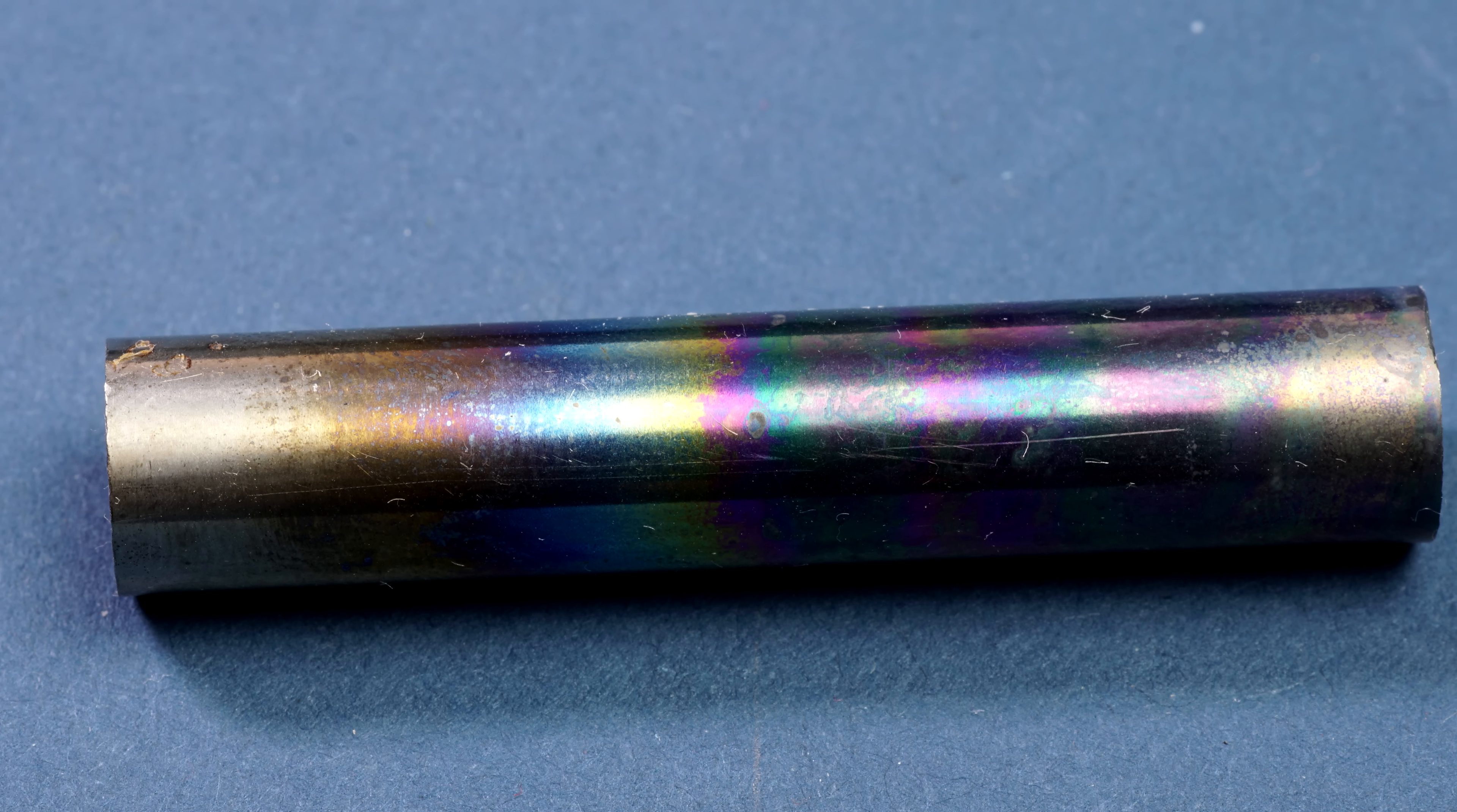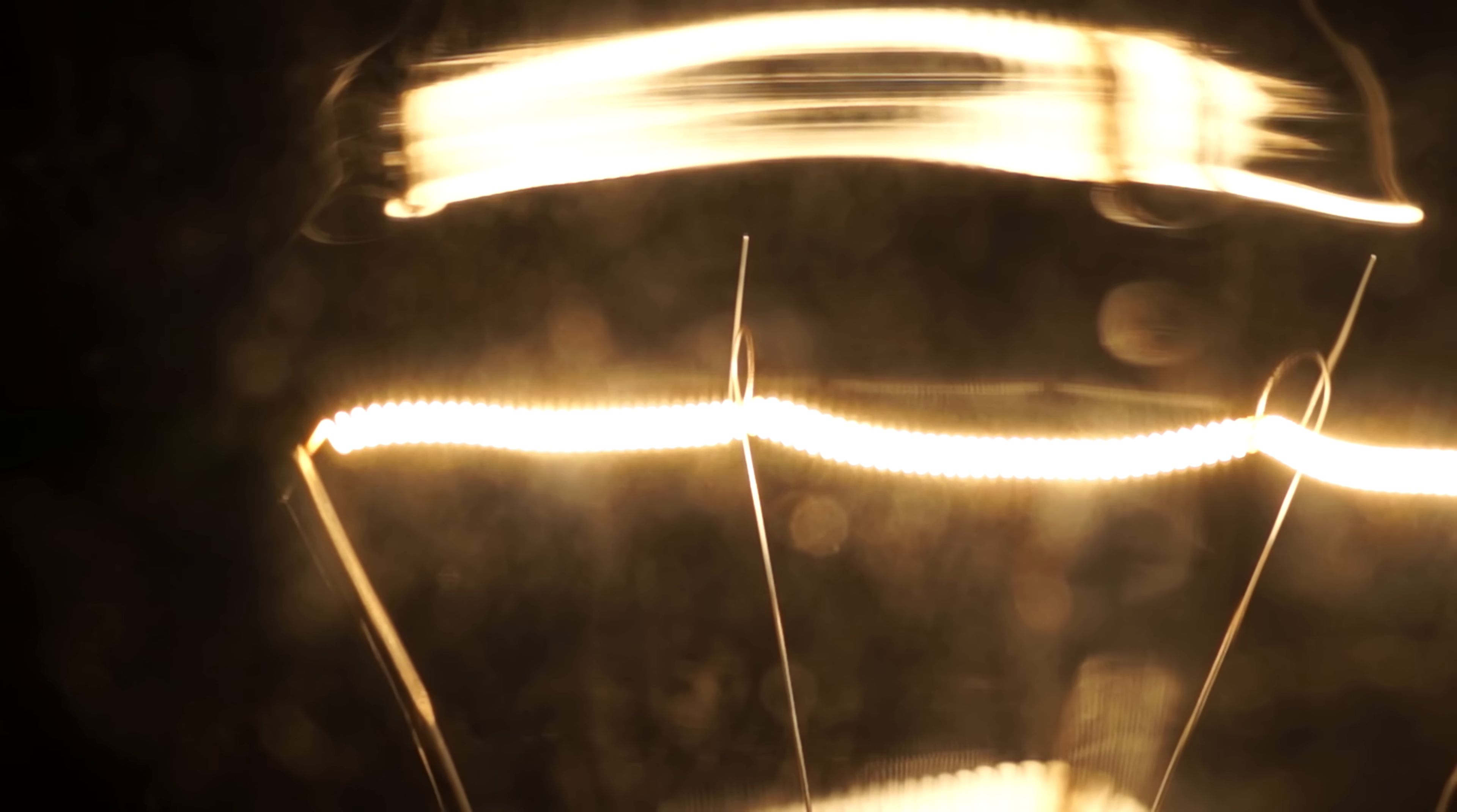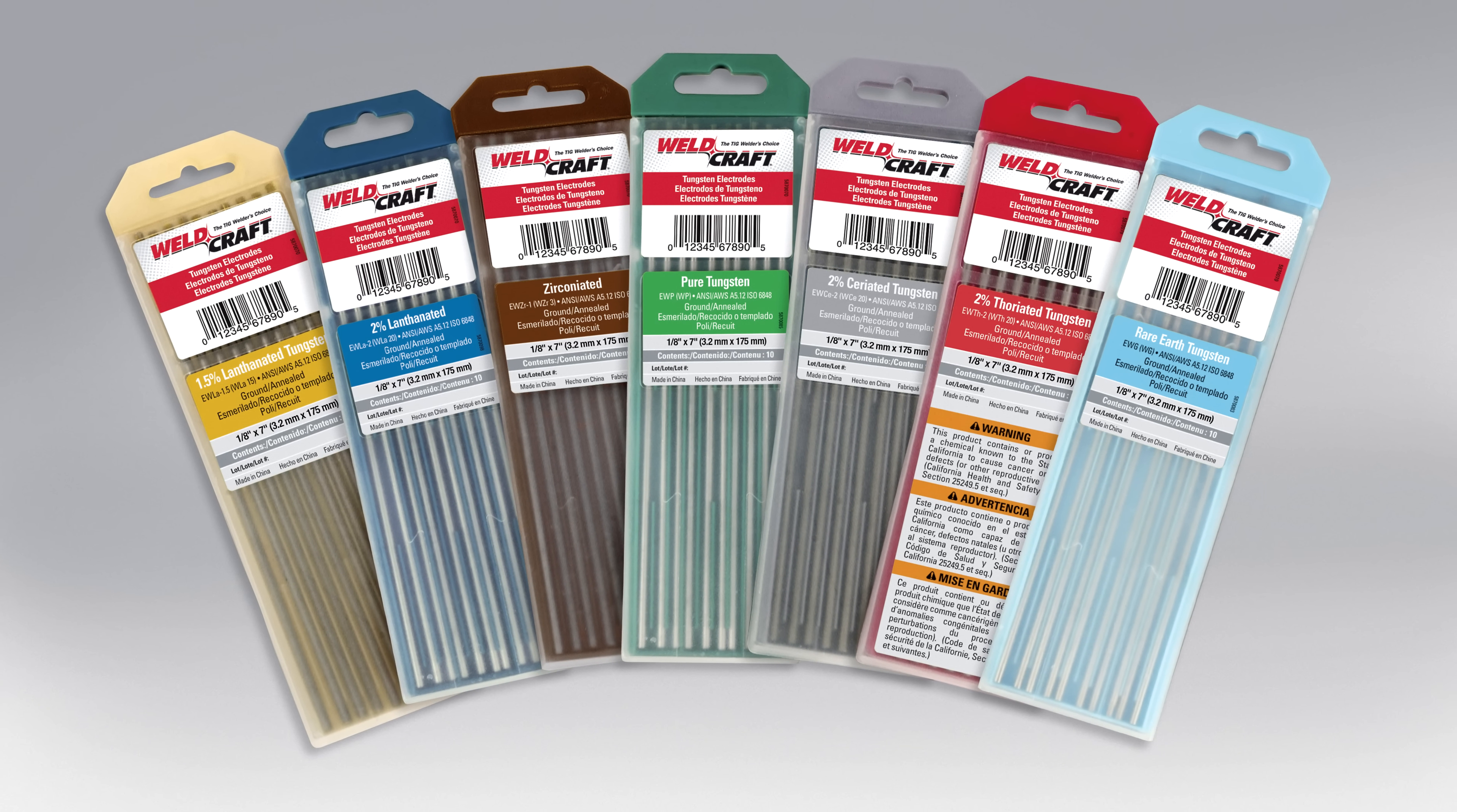Today, tungsten finds many applications. First and foremost, this metal is used in filaments for the halogen lamps, refractory electrodes for argon arc welding...